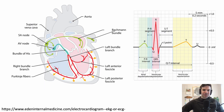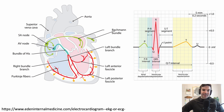This will help you understand what the deflections mean. First up, we have the SA node. The SA node fires, we have a P wave, and then the time it takes from the SA node to the AV node is that PR segment. Thereafter, the signal goes down into the ventricle — as it goes down, that's the QRS. And then after the signal has fired, there's repolarization, and that is the T wave.